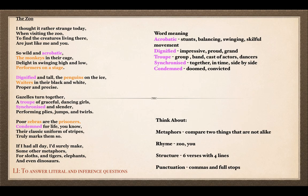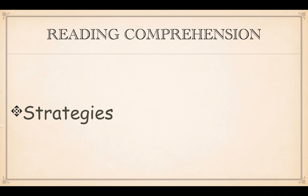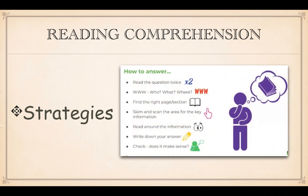Let's look at the strategies for reading comprehension that we covered recently. Sometimes you need to read the question twice if you don't understand it. Remember the three W's: who, what, where — who's in that verse, what are they doing, where are they. These are questions you should be asking yourself as you read: who's involved, what are they doing, where are they, and what is that character being compared to if we're thinking about metaphors.